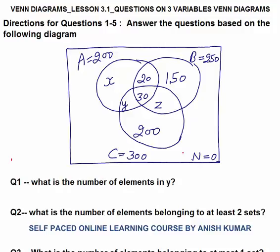Hello, this is Venn Diagram lesson 3.1. In this I will discuss questions on three variable Venn diagrams. Before going through this lesson you have to first understand lesson number three, basics of three variable Venn diagrams. If you have understood that lesson, pause the video and try to solve each question by yourself, then look at the way I have solved. The directions for questions 1 to 5: answer the questions based on the following diagram.